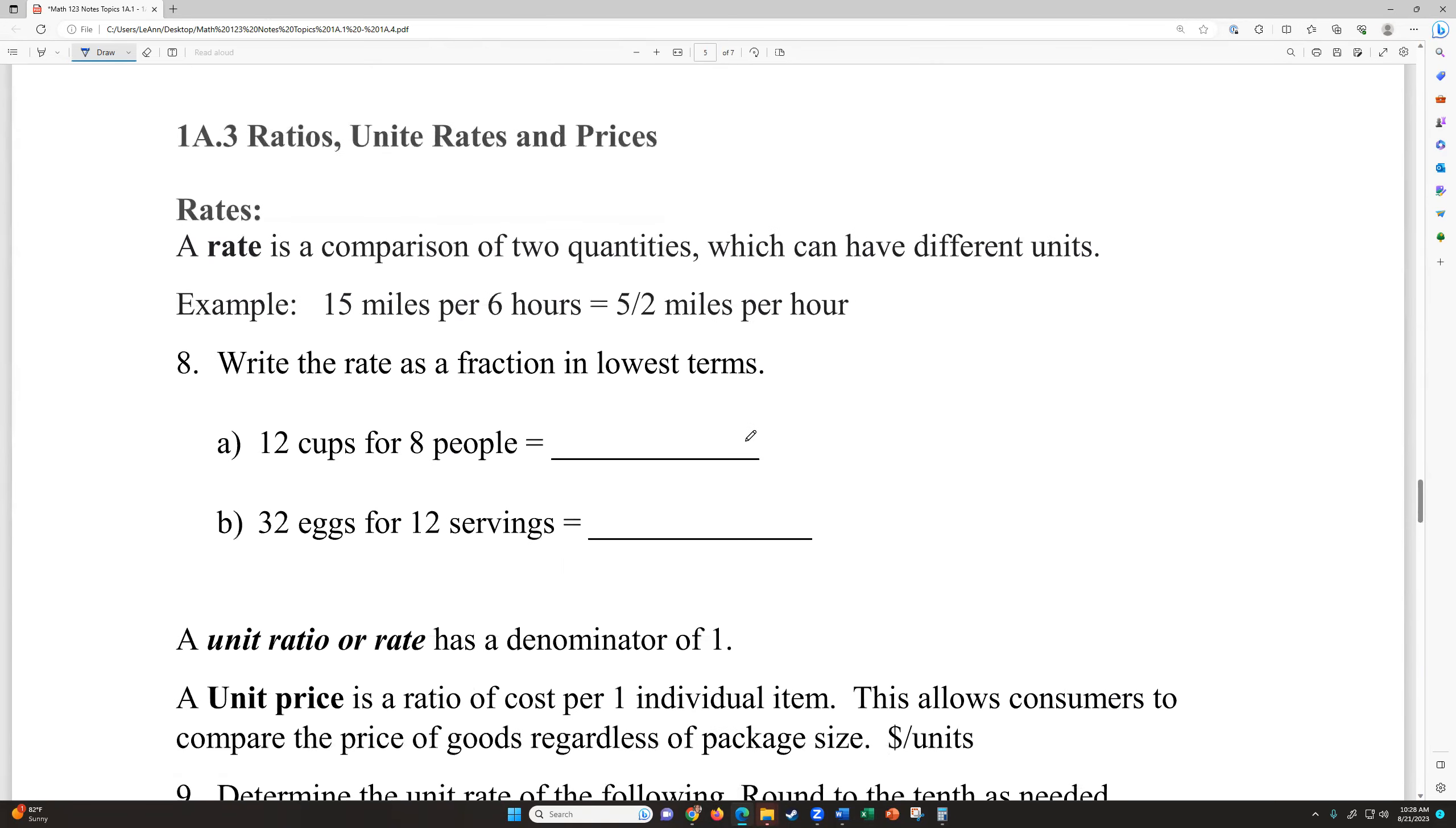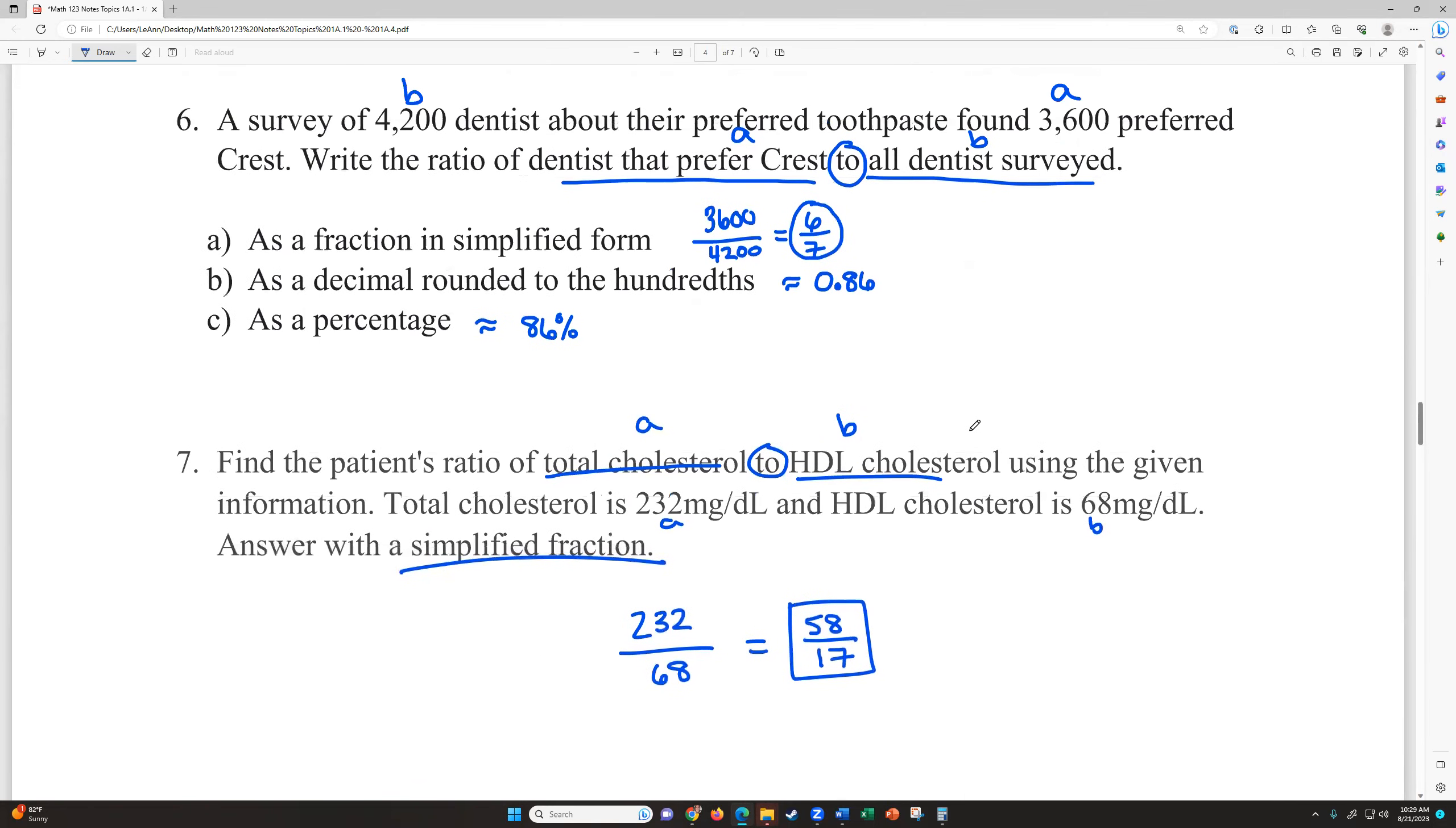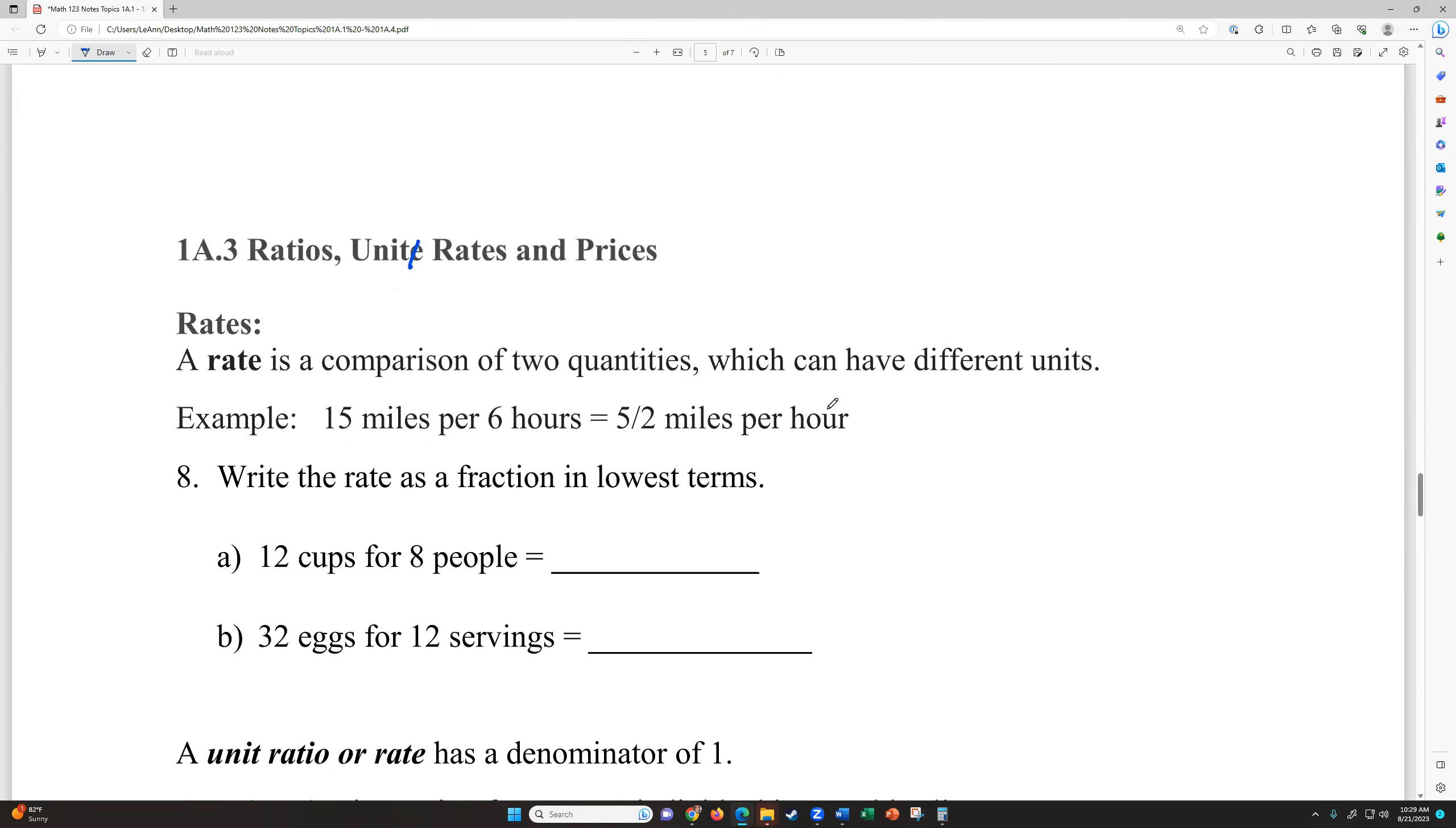So now we're looking at 1A3 ratios. This should say unit rate, that's a typo, and then prices. So this is building off of what we just talked about. A rate is a comparison of two quantities which can have different units. Ratios are usually same quantity units. So like we want them to be inches over inches or something like that or cholesterol over cholesterol. Dentist over dentist. Whereas we can have different units when we're doing with rates.